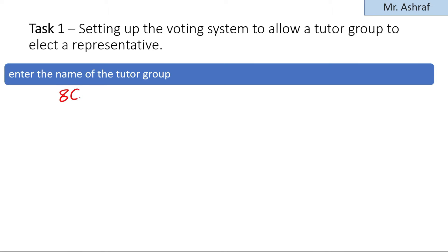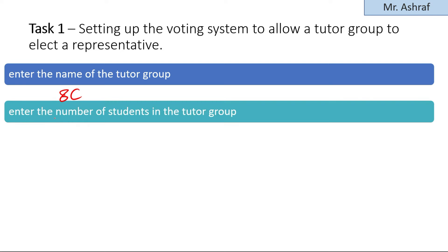In Task 1, setting up the voting system to allow the tutor group to elect a representative, let's have a simple simulation of the program. After completing the pseudocode solution, the first question should appear asking the user to enter the name of the tutor group — for example, entering '8C' as a tutor group name.